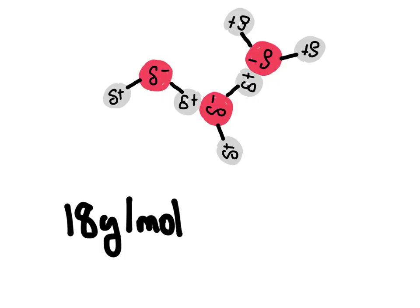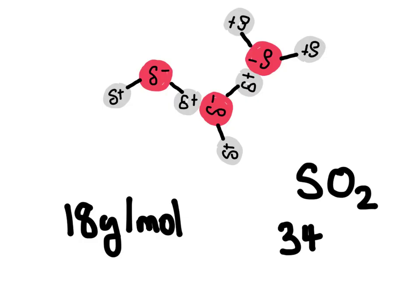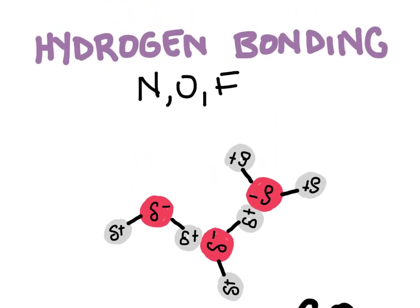Sulfur dioxide, by comparison, has a molar mass of 34 grams per mole — more than twice as heavy as water. You might think it should stick together more, and we saw that heavier octane is a liquid while lighter methane is a gas. However, sulfur dioxide is actually a gas at room temperature, while water is a liquid. The reason is that water has hydrogen bonding whereas sulfur dioxide does not. Since hydrogen bonding is so strong, water — a very lightweight molecule — remains a liquid.